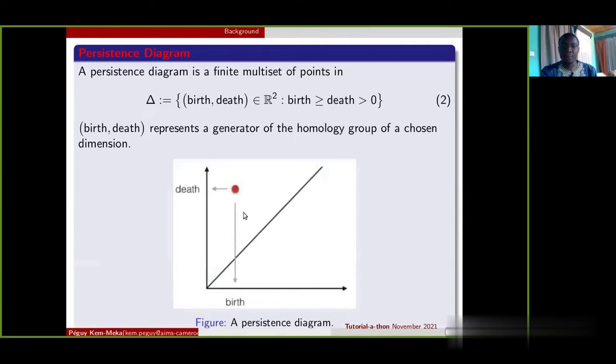In the persistent diagram, a point has an x coordinate which represents when a cycle is created and a y coordinate which represents when a cycle dies.